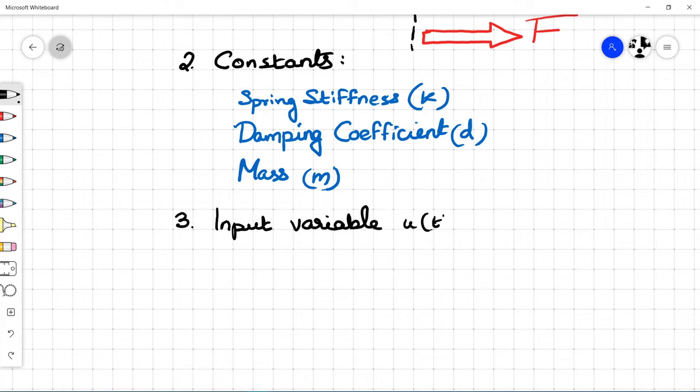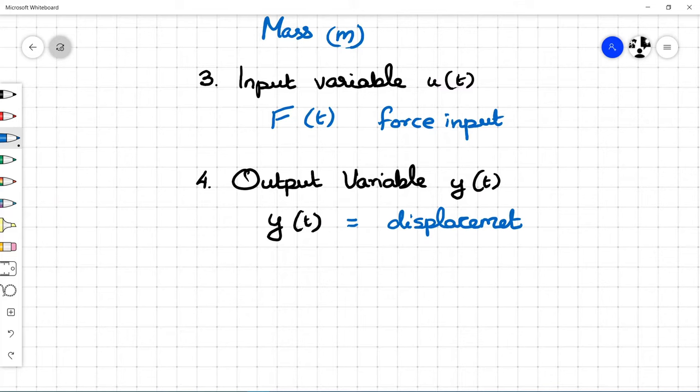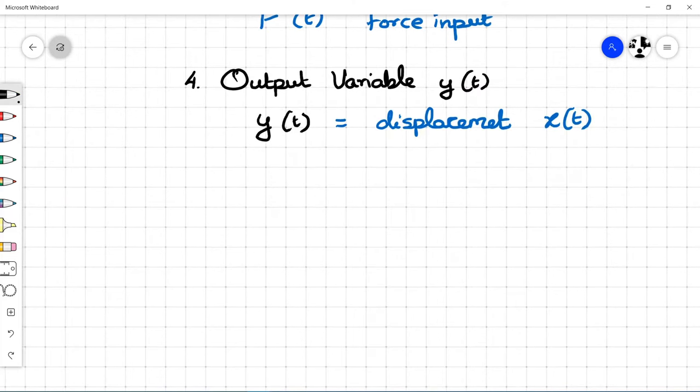Specifying input variable and output variable are the next steps. F(t), the external force, is the input variable. Output variable is the displacement of the mass x(t). This means we will be able to change the displacement of the mass by changing the applied input force.